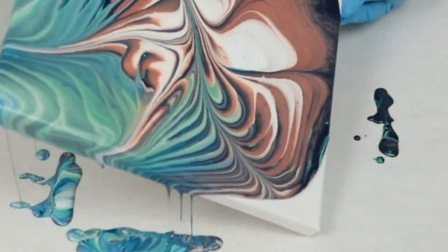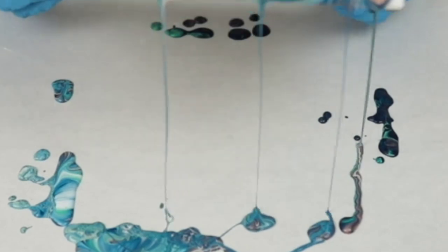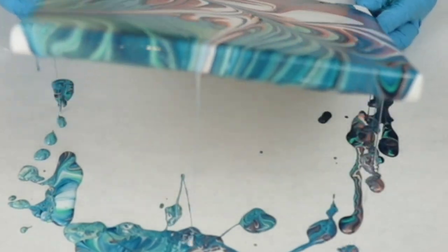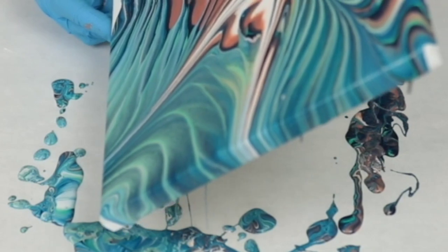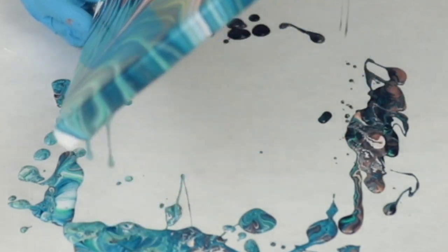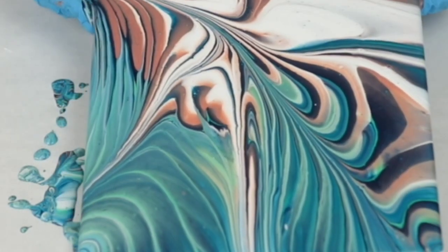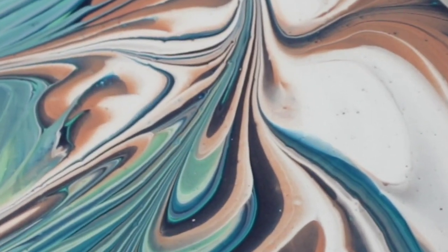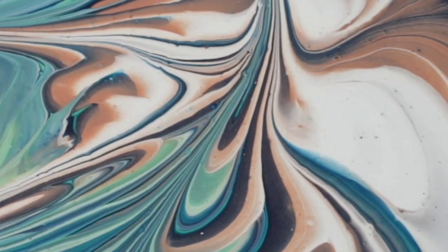Keep in mind, certain paints are known to cause cells. Like this rose gold that I used here is one of them. It absolutely can contribute to causing cells. I knew that going into this piece and expected that, so I was pretty happy with it.